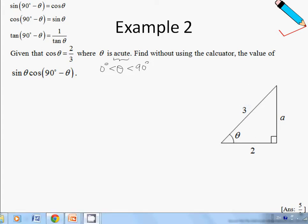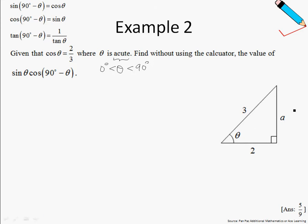And then using Pythagoras' theorem, we can work out that this unknown side A is actually root of 5.